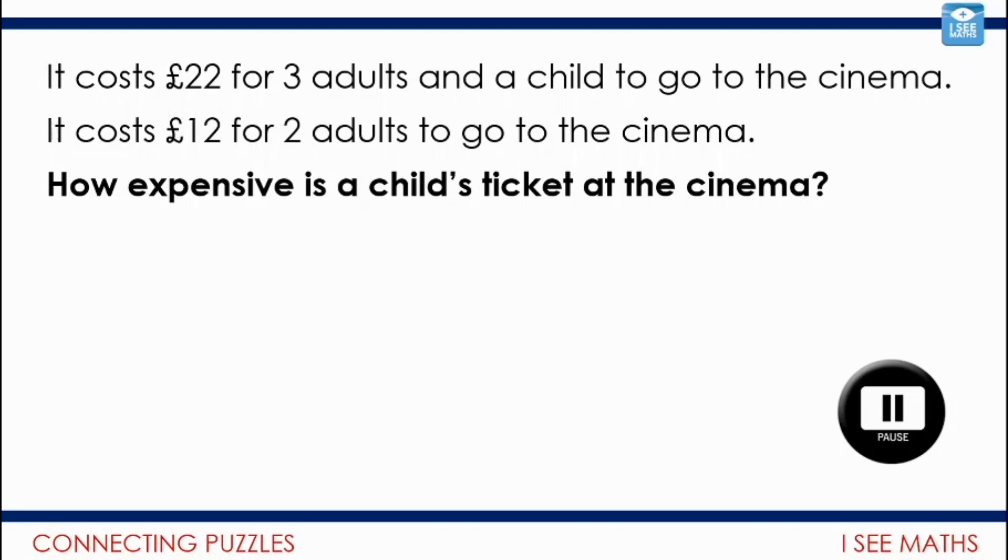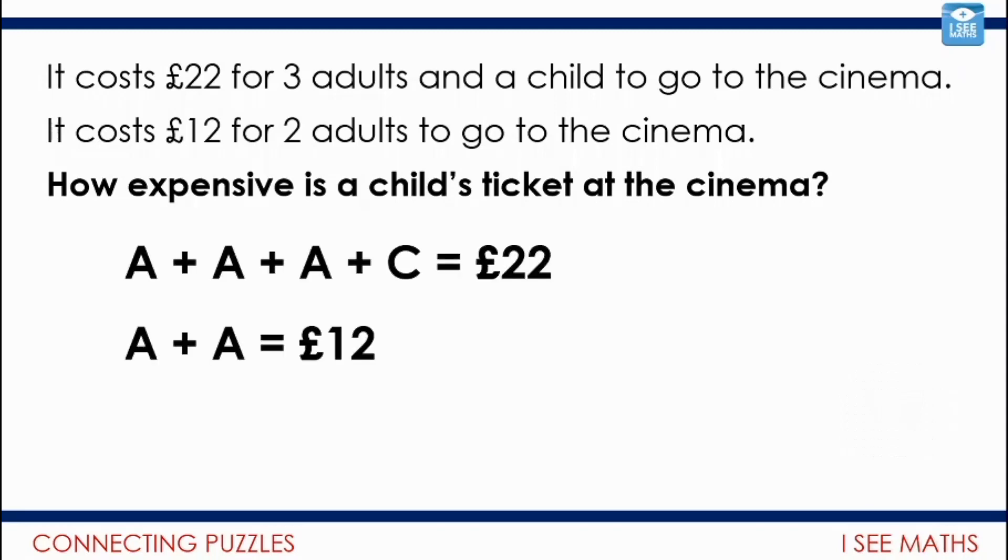Okay, let's have a look. Now, there's different ways, of course, this can be done. Let me show you how I went about doing this one, because rather than drawing a circle, I actually just wrote letters instead. So the adults are represented by the a and the child by the c. So a plus a plus a plus c equals £22. Then I know a plus a, two adults, is £12. I find that a simpler way of taking all those words and putting it into something mathematical.